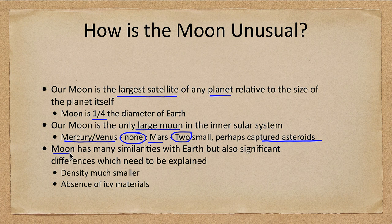When we look at the moon, we find similarities and differences which need to be explained. Our model of how the moon formed has to be able to explain these. For example, why is the moon so much less dense than Earth?